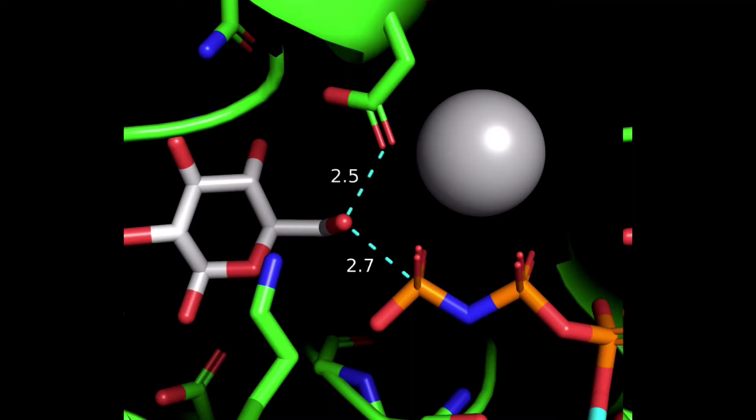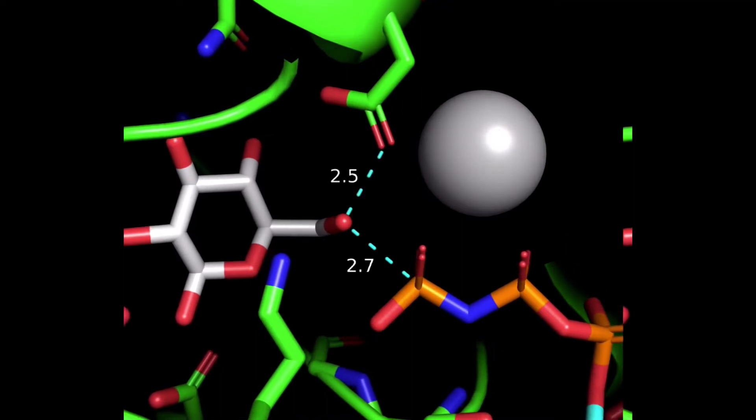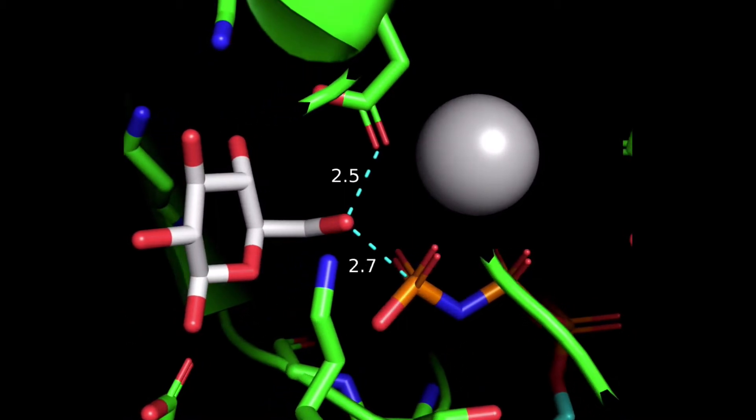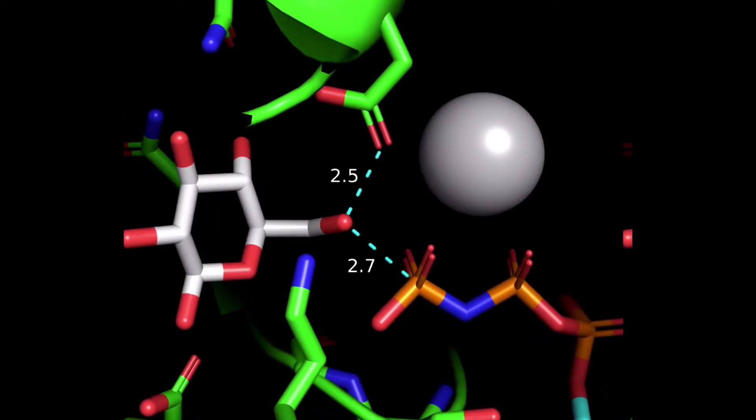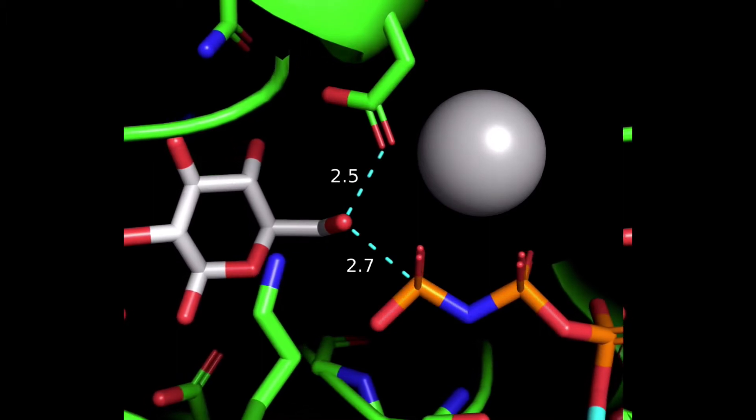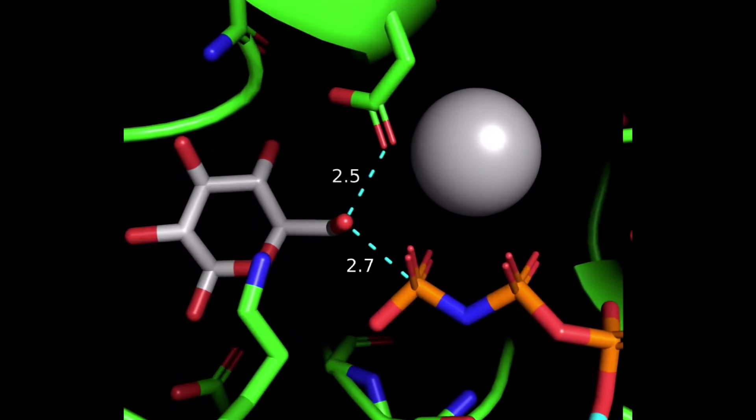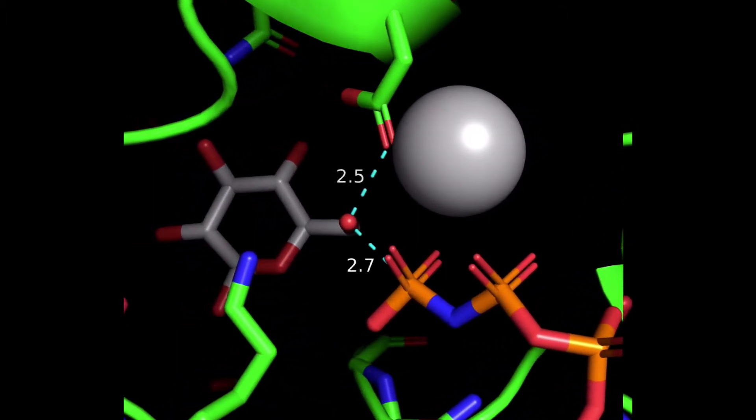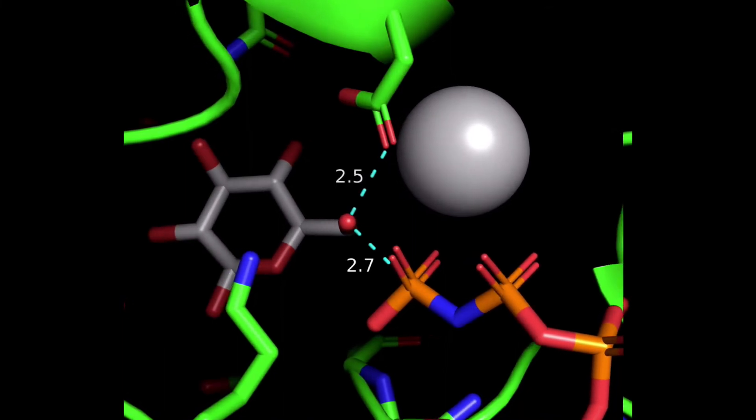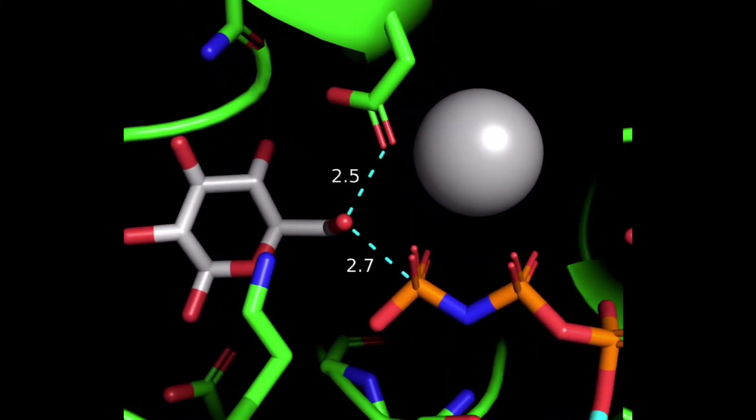Now check out this aspartate residue over here. This is an acidic amino acid and is an anion at biological pH. This is the amino acid residue that accepts the proton off of glucose, which allows it to use those electrons that are left behind to bond to the phosphate group.